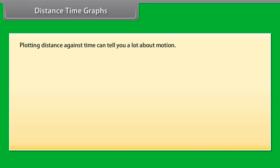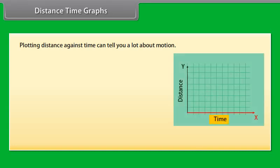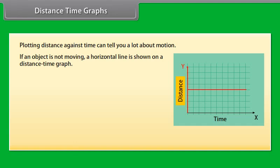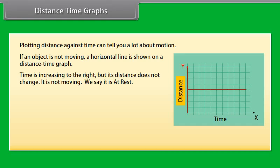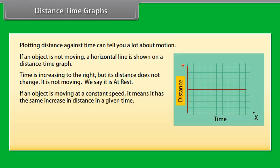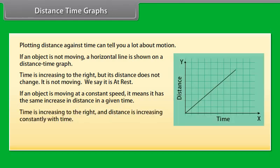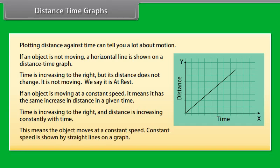Distance-time graphs: Plotting distance against time can tell you a lot about motion. Time is always plotted on the x-axis — the further right, the longer the time from the start. Distance is plotted on the y-axis — the higher the graph, the further from the start. If an object is not moving, a horizontal line is shown, meaning time increases but distance does not change — it is at rest. If an object moves at a constant speed, it has the same increase in distance in a given time, shown by a straight line on the graph.